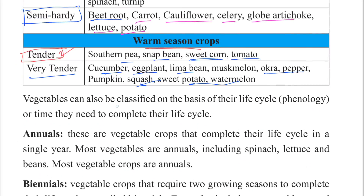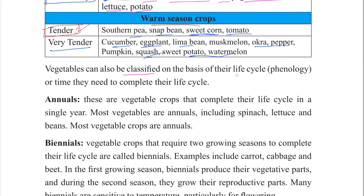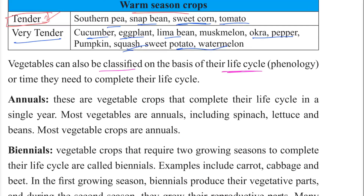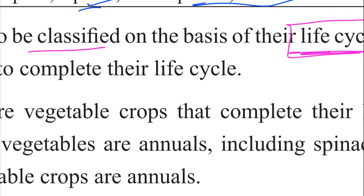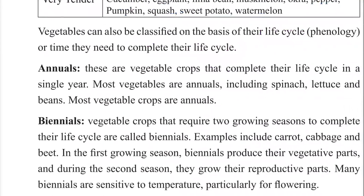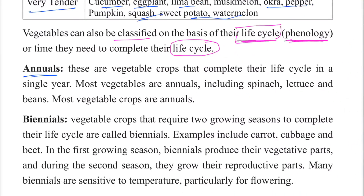Vegetables can also be classified on the basis of their life cycle, also known as phenology, or the time they need to complete their life cycle. These are vegetable crops that complete their life cycle in one season or more.